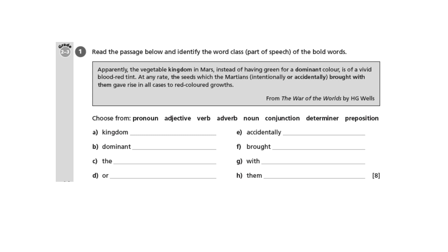I'm going to start by explaining the word classes first. A pronoun is a word that replaces a noun so that we don't have to keep repeating it — the word 'it' is a pronoun. An adjective is of course a describing word. A verb is a doing word. An adverb tells us how something is done and usually ends in 'ly'.